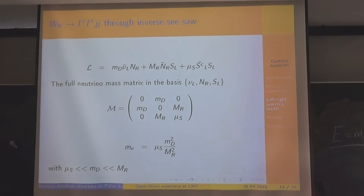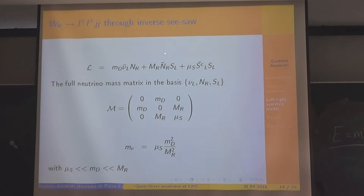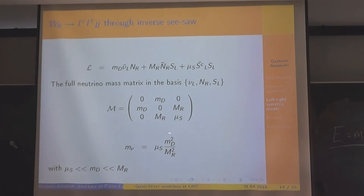We worked in the inverse seesaw mechanism. In order to implement this, we add to the content of the left-right symmetric model a new singlet S. The Lagrangian contains a Dirac mass term M_D, a Dirac mass term M_R, and the Majorana mass term mu_S that violates lepton number. In one generation, after diagonalization of the mass matrix, the eigenvalue for the lightest neutrino is m1 proportional to M_D squared times mu_S over M_R squared. With the choice of M_R at the TeV scale, M_D at the GeV scale, mu_S is of order MeV — the smallness of neutrino masses is guaranteed by the smallness of mu_S.